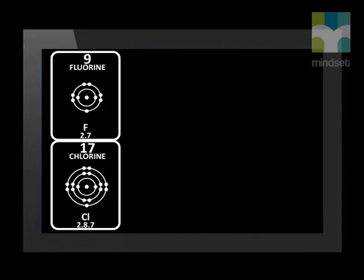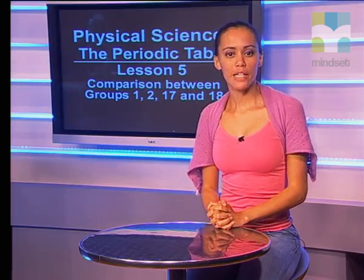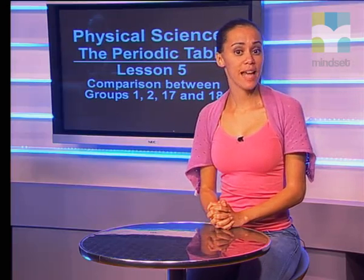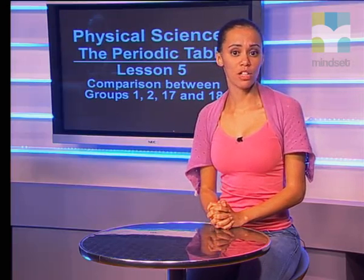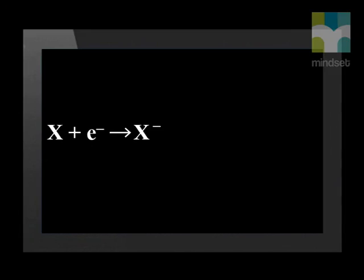Now if we look at the electronic structure of group 17, the halogens, we can see that they have 7 valence electrons. They therefore need only one electron to have the same electronic structure as the next noble gas. Atoms in group 17 therefore accept an electron and so form a negative ion.